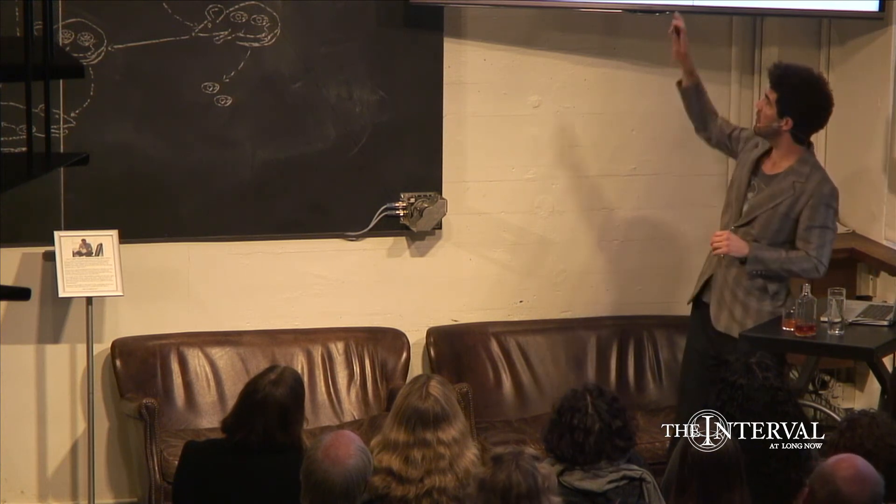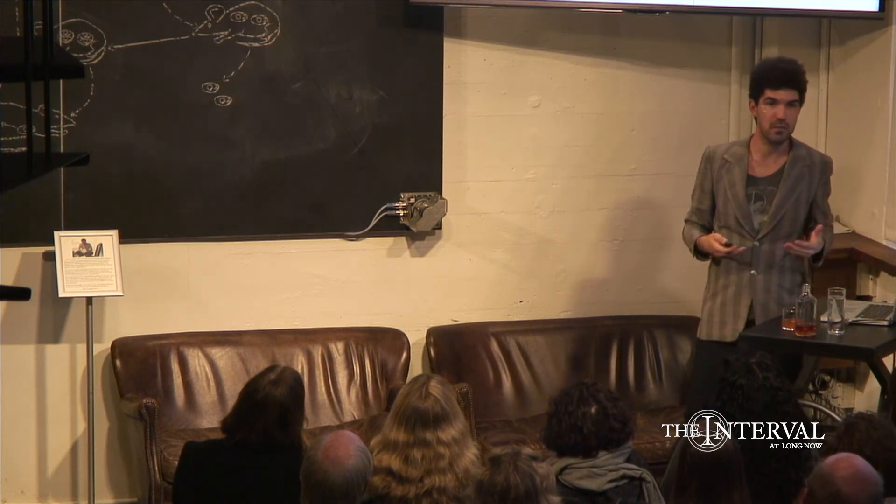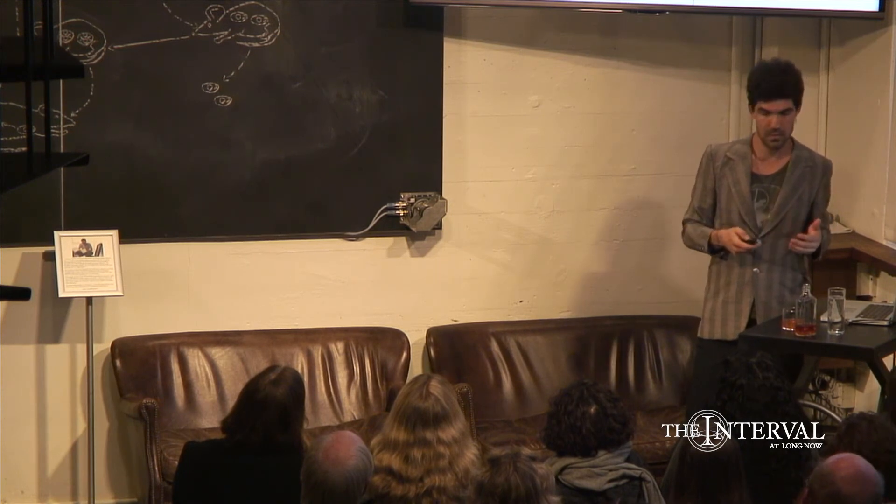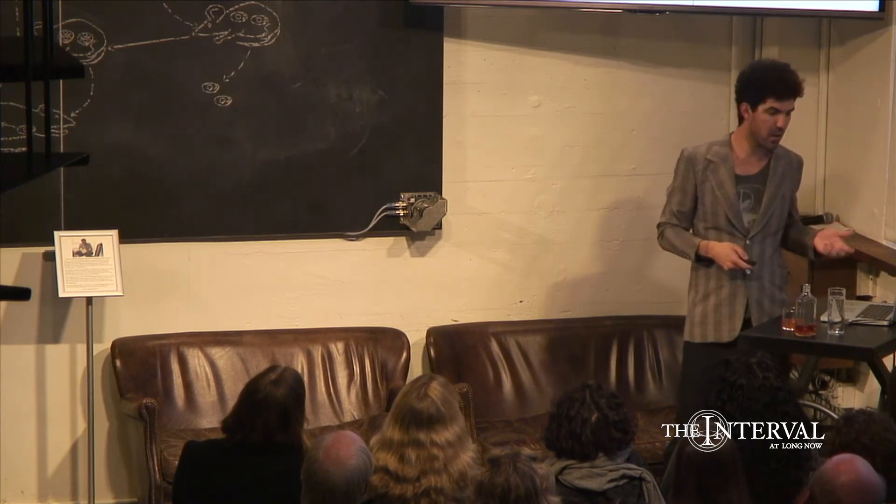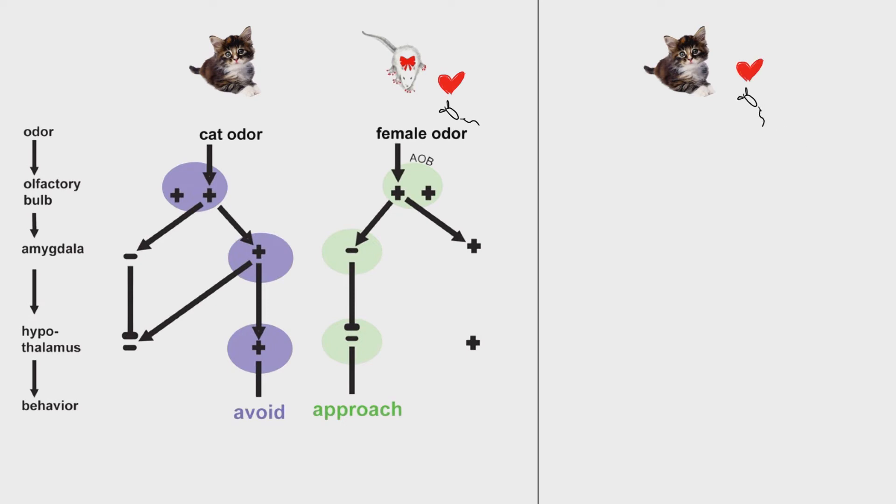There are different pathways, different circuits. This helps us ask the following question: we now have the infected mouse that's attracted to the cat, and we can choose between two hypotheses.